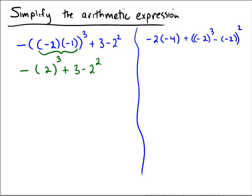Next I see some exponentiations. I'm going to perform both of the exponentiations I see. 2 to the power of 3 would be 8, so I'm going to write an 8 right here, plus 3 minus, now 2 squared would be 2 times 2, which is 4.